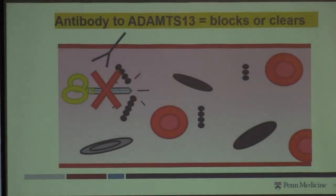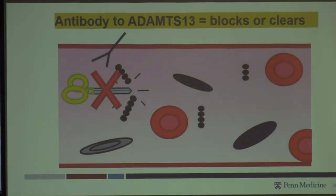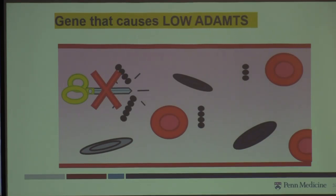Why would ADAMTS13 be low? We don't know exactly what triggers it, but we do know there's an antibody involved. You're supposed to make antibodies to things like viruses or vaccines, but for some reason patients with TTP start to recognize their ADAMTS13 as non-self and start to either clear it or inhibit its function. In other patients — more rarely — you can have an inherited mutation or gene that causes low ADAMTS13.